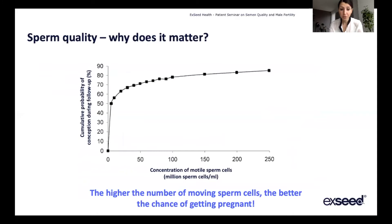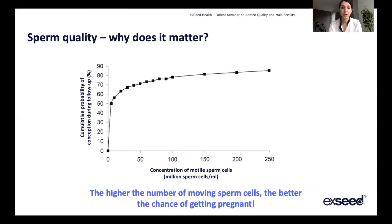But does it really matter? Of course it matters. Because the better the sperm quality, the better chances you have of getting pregnant. The more sperm cells you have surrounding the egg, the better the chances that one of them will enter the egg and cause pregnancy. You can see here that this graph shows the concentration of motile sperm cells and the probability — the chance of pregnancy. The higher the number of motile sperm cells you have, the higher the chance of pregnancy.